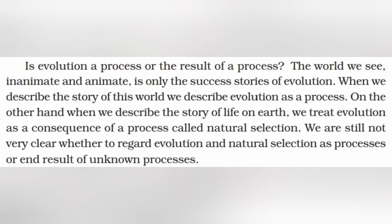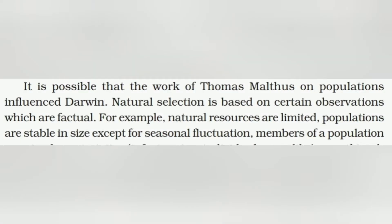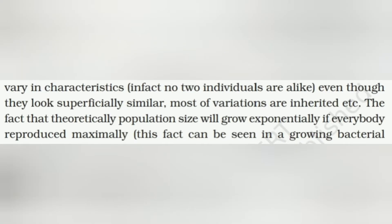We are still not very clear whether to regard evolution and natural selection as process or end result. It is possible that the work of Thomas Malthus on population influenced Darwin. Natural selection is based on certain factual observations: natural resources are limited; populations are stable in size except for seasonal fluctuation; members of a population vary in characteristics — in fact, no two individuals are alike. Even though they look superficially similar, most varieties are inherited.